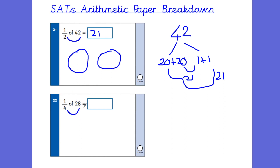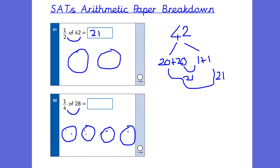Question 22: a quarter of 28. This is a good one to use the drawing method for because you're sharing into four groups and it's not drawing too many. Draw 4 groups and share 28 dots equally. Counting how many is in one group — 7 in each. So a quarter of 28 would be 7.